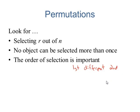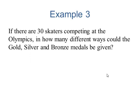If there are thirty skaters competing at the Olympics, in how many different ways could the gold, silver, and bronze medals be given?